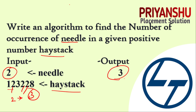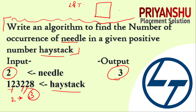In L&T questions there are a lot of story-type descriptions, but focus on the core statement — it always starts with 'write an algorithm to...' followed by the actual task. I'm not showing the full story part; I just want to show you the question type. Don't waste time reading the story — with only 45 minutes for two coding questions, focus on the core logic.